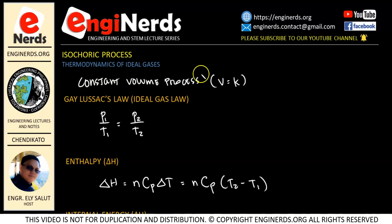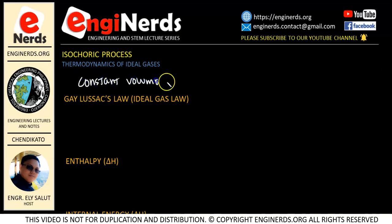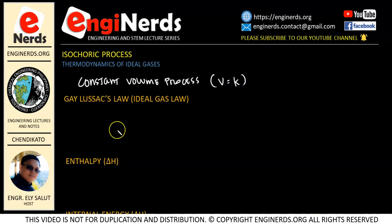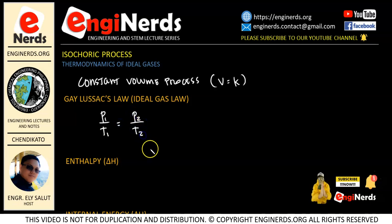Let us now jump to our discussion. First, let us explain what we mean when we say we have an isochoric process. On some references, you will find them using the term isometric process. When we say we have an isochoric or isometric process, we mean that we have a constant volume process. So our volume is constant. When we have a constant volume process, we use Gay-Lussac's law for an ideal gas, which states that the initial pressure over the initial temperature equals the final pressure over the final temperature.